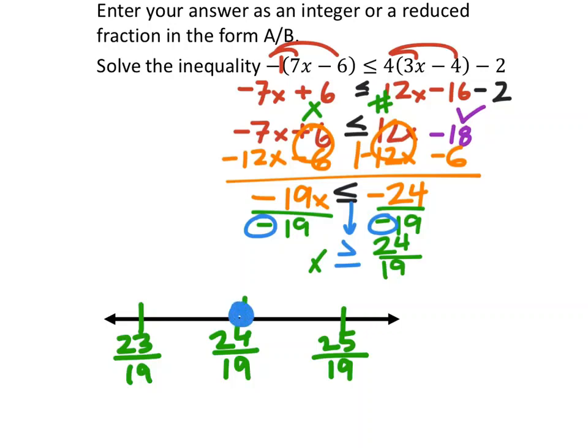That's a closed circle because it includes the 24/19 as a solution. And this one eats the x, so the line goes to the right. Done.